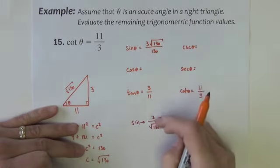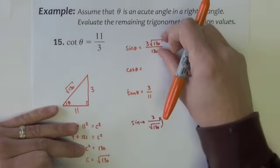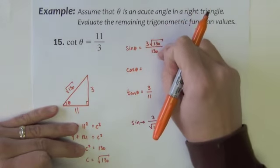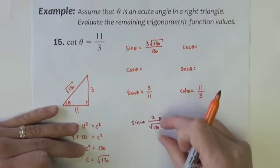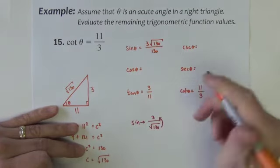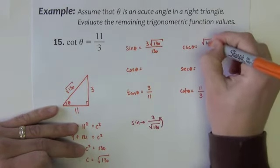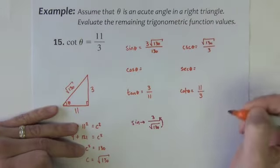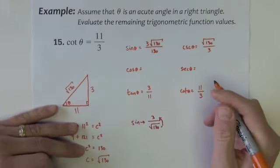Now the cosecant is just sine's reciprocal. I don't want to reciprocal this as it's going to put the radical back on the bottom. I'm going to reciprocate the original and it would be the square root of 130 over 3. Easier to do like that.